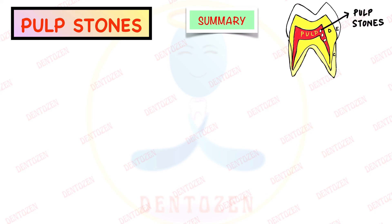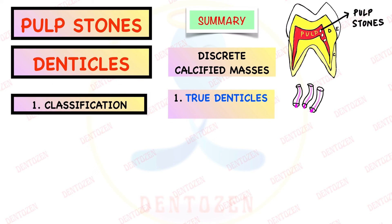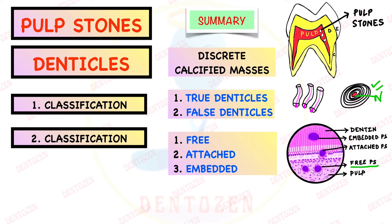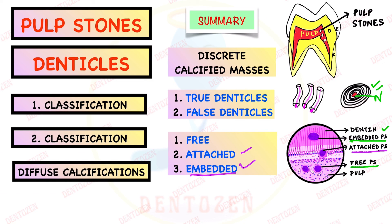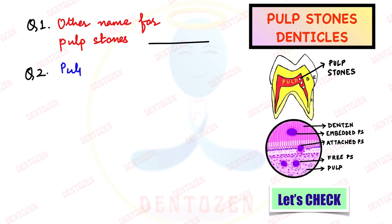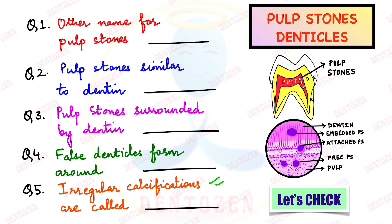Summary: Pulp stones are also called denticles and are discrete calcified masses. They are classified as true denticles when they resemble dentine and have dentinal tubules and odontoblastic processes, or false denticles when they do not resemble dentine but form in concentric layers around a nidus. Second classification: free (lying freely in the pulp), attached (attached to dentine), or embedded (completely inside dentine). There can also be diffuse calcifications — irregular calcifications — and their clinical significance is that they can complicate root canal treatment. Quiz: What is the other name for pulp stones? What are pulp stones similar to dentine called? What are pulp stones surrounded entirely by dentine called? What structure do false denticles form around? What name is given to irregular calcifications of the pulp?